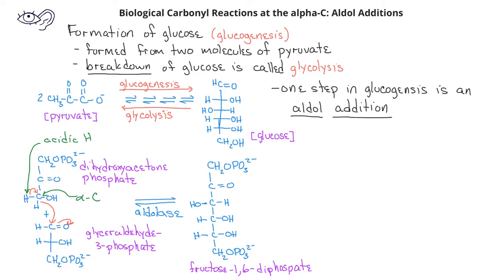The product is fructose 1,6-diphosphate, which, through a series of other steps, is subsequently converted to glucose.